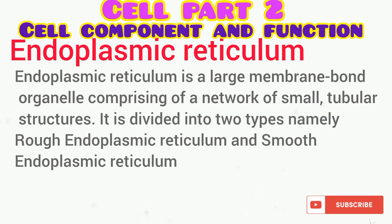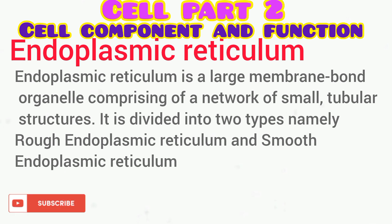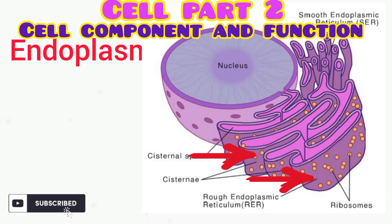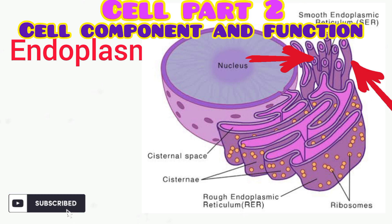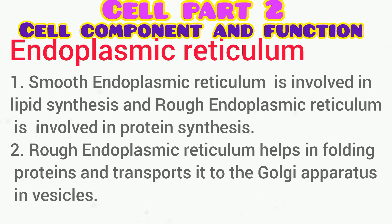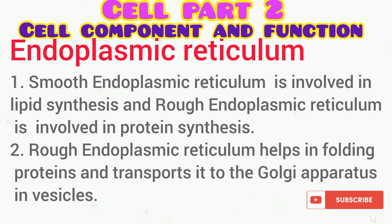The next cell organelle or component is the endoplasmic reticulum, which is a large membrane-bound organelle comprised of networks of small tubular structures. It is divided into rough endoplasmic reticulum, which has ribosomes attached to it as seen in the diagram, and smooth endoplasmic reticulum, which does not have ribosomes attached. The function of the smooth endoplasmic reticulum is lipid synthesis, while the rough endoplasmic reticulum is involved in protein synthesis, protein folding, and transporting proteins to the Golgi apparatus.